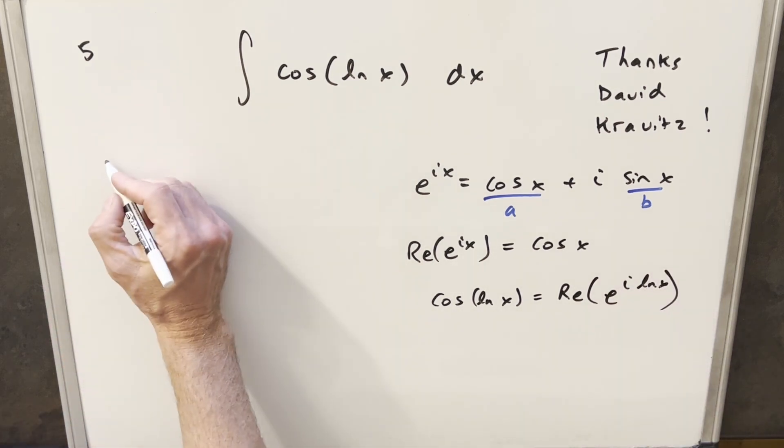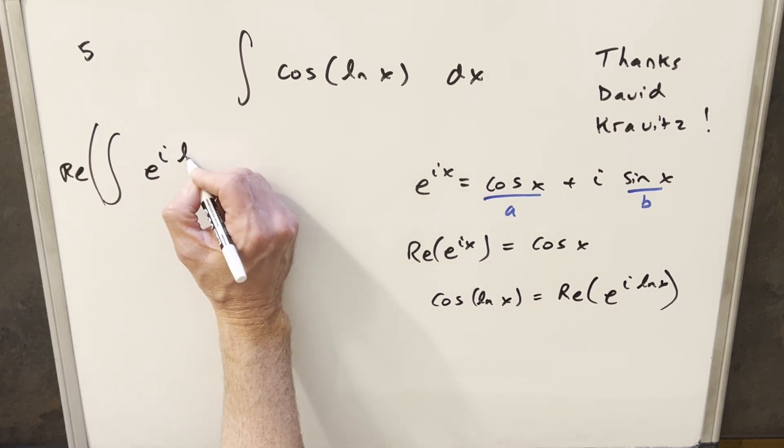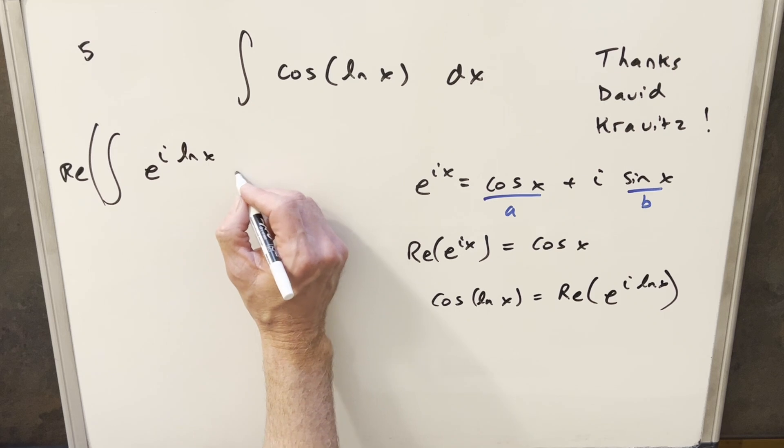Now getting back to our integral, let's rewrite this using this here. What I can do is bring the real part in front of the whole integral and just use this. We can write our integral as e to the i ln x dx.